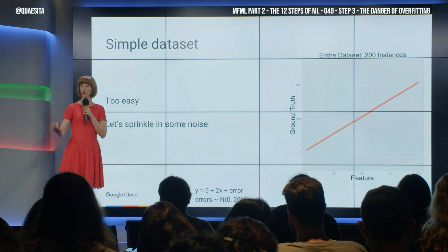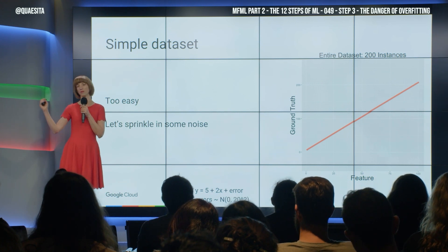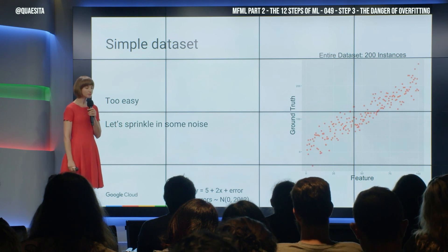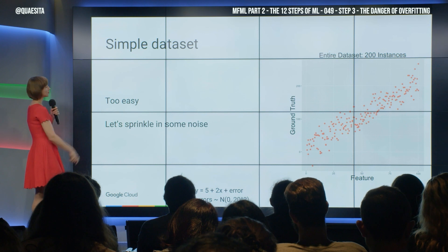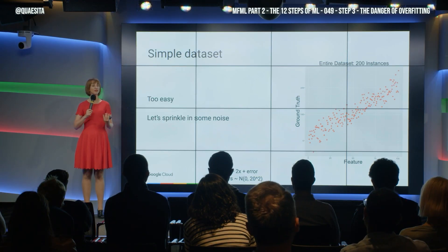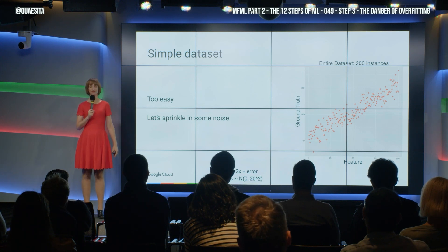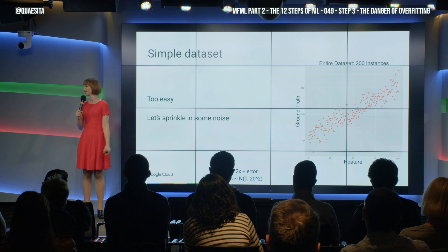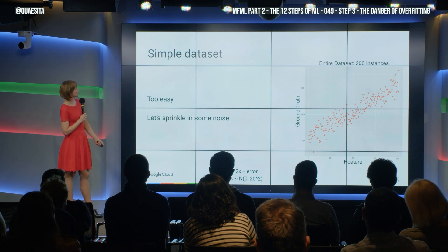Why don't we put in some noise? Noise that you will not be able to ever predict with any information available to you. 200 data points that are based on our line plus some random noise. Now that we have noise, does that mean that we are stuck, that we should just guess entirely at random, haphazardly — or can we actually do better than guessing at random? I think we can. Let's use machine learning to do better.